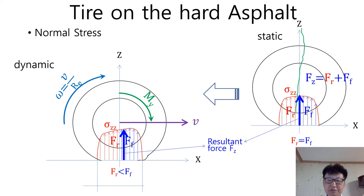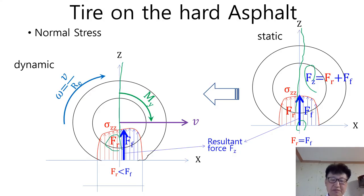The acting line of the resultant force FZ is located at the center of the tire contact patch. But when the tire is rolling, various types of rolling resistance are activated. Therefore, the normal stress distribution shape changes to an asymmetric one, as shown in the left picture. The normal stress distribution has different quantities in the preceding and following contact patch respectively. Due to rolling resistance, the resultant force in the preceding part of the contact patch is bigger than in the following part, so the acting line of resultant force FZ moves to the preceding part of the tire.